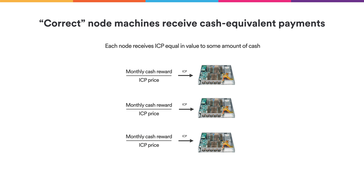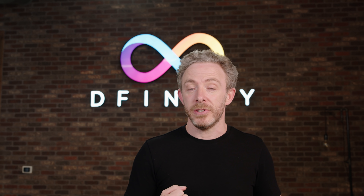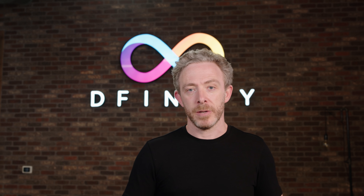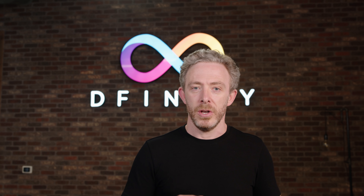By contrast, correctly functioning node machines receive cash equivalent payments. That is, some monthly reward defined in cash terms is simply divided by the ICP price to determine how many ICP should be dispersed. This is because node operators have relatively fixed recurring costs composed of hosting costs, equipment depreciation and so on.